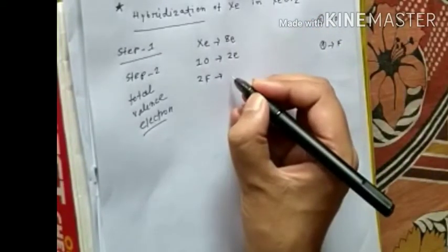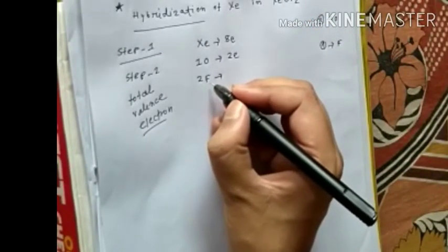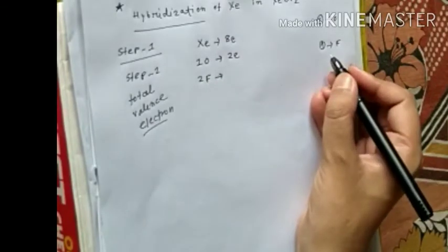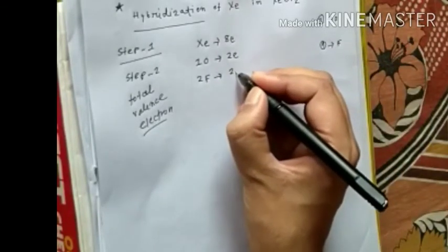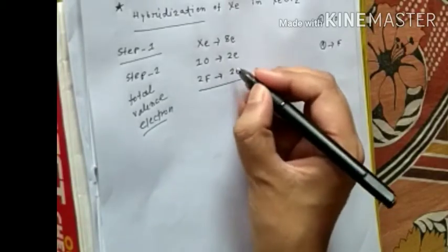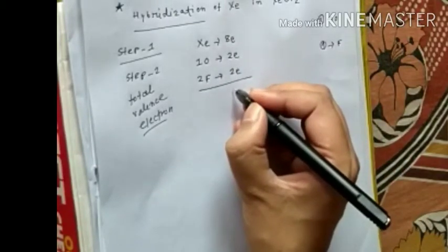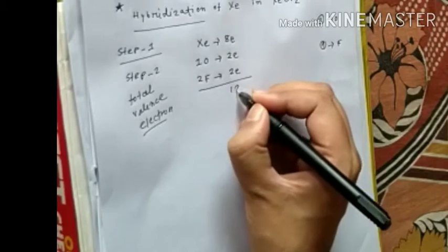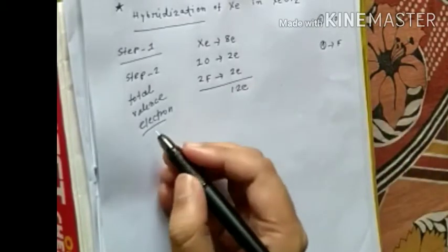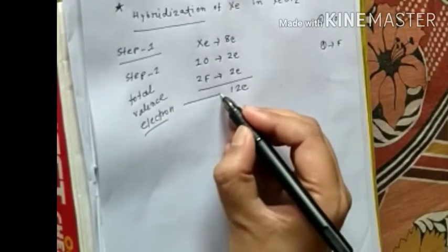Each fluorine atom contributes one valence electron: 2 times 1 equals 2, plus 2 equals 4, plus 8 equals 12 electrons. So this is the total valence electron around the central atom.